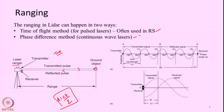In some survey instruments we also use a phase difference method. Phase difference method means we send a continuous beam of laser. In the time of flight method, one pulse is transmitted for a very short time period — say 1 nanosecond or 5 nanoseconds — towards the target, which will go, reflect, and come back, and then we send another pulse. But in the case of a continuous beam, we are continuously transmitting laser.